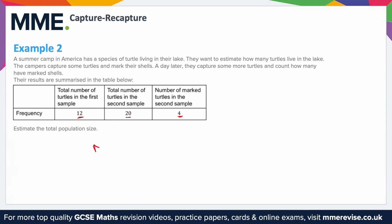So again, we can use this form of the equation: N equals lowercase n over m times uppercase M. Assigning values: uppercase M is the total number of turtles in the first sample, which is 12. Lowercase n is the number of turtles in the second sample, which is 20. And lowercase m is the number recaptured — the number with the tag in the second sample — which is 4. Substituting into the equation, we get 20 over 4 times 12. 20 divided by 4 is 5, and 5 times 12 gives us 60.